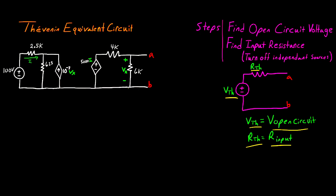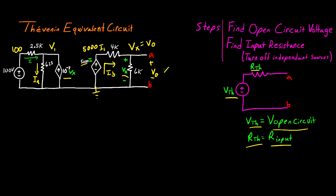The first thing I'm going to do is find the open circuit voltage between points A and B. To start, I'm going to label my component currents — I'll call this I_A and this I_B. Now all my components have currents. My next step is to label my node voltages. I'll call this my ground, and this node 100 volts because the 100-volt source is referenced to ground. I'll call this V1, this node 5000·I1, this node V_x, and I'll note that V_x equals V_o here, since that V_x label is referenced in the dependent current source and V_o is referenced in the same place.